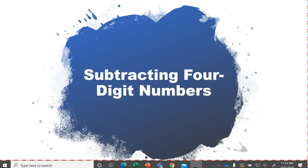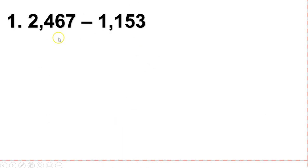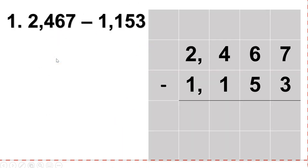Hey there, third grade Lafayette Lions. This is Mr. Nichols, and today we're going to work on subtracting four-digit numbers. Whenever we get a number that is lined up horizontally, we want to rewrite it going up and down on grid paper, because that allows us to line up all of our place values — our ones, our tens, our hundreds, our thousands. So we want to line it up on grid paper first.